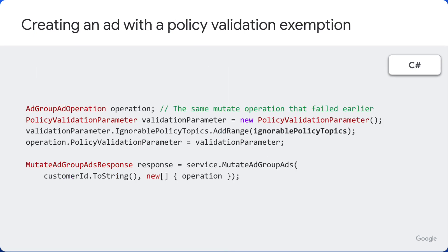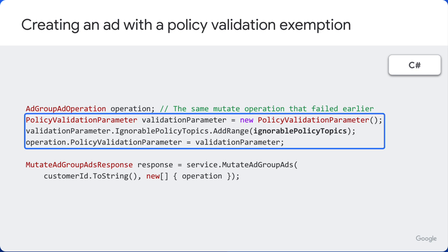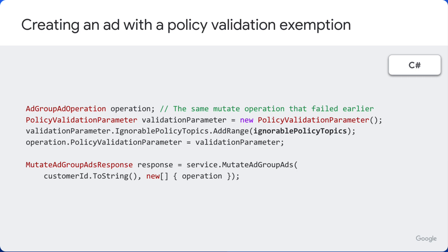Now that we have collected the ignorable policy topics, we can send the same mutate operation that failed earlier with an additional policy validation parameter containing the policy topics we'd like to ignore. This will now succeed and the created ad will be reviewed to determine whether its policy violations are indeed ignorable.